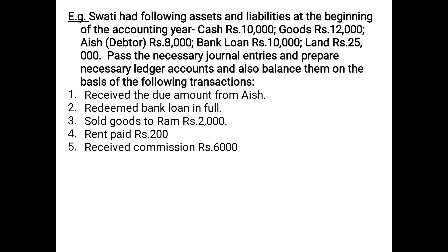Swati had the following assets and liabilities at the beginning of the accounting year: Cash 10,000; Goods 12,000; Ash (a debtor) 8,000; Bank Loan 10,000 (a liability); and Land 25,000. You have to pass the necessary journal entries, prepare necessary ledger accounts, and balance them on the basis of the following transactions — the first being: receive the due amount from Ash.